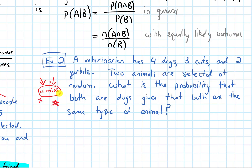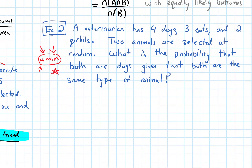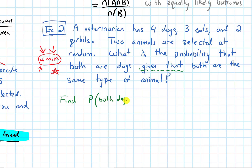Hopefully you've paused and tried this one for about four minutes. Let's talk about it together. We want to find a conditional probability because the problem specifically uses the words 'given that,' and that's a big indicator of conditional probability. So it wants us to find the probability that both are dogs, given that both are the same type of animal.